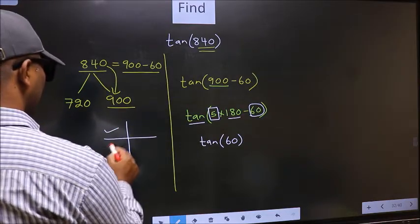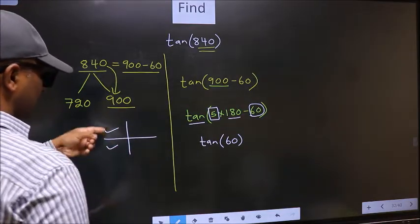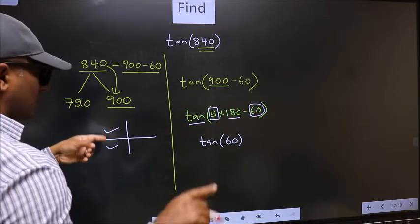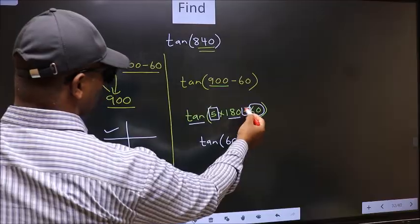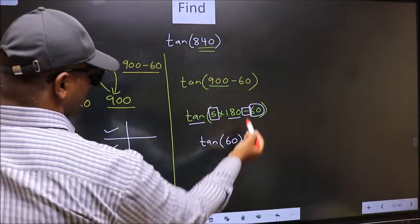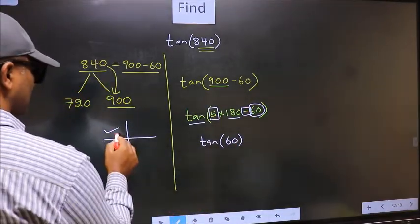So now to select the quadrant, we should look at this symbol. Here we have negative. That means this angle, this symbol lies in the second quadrant.